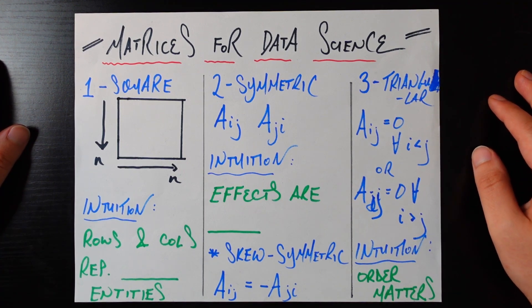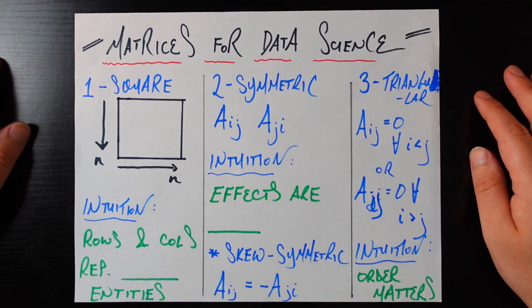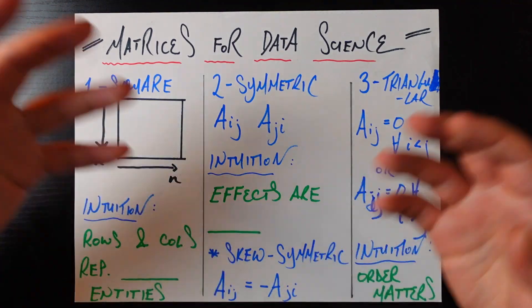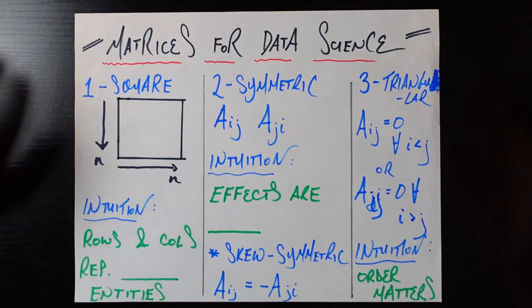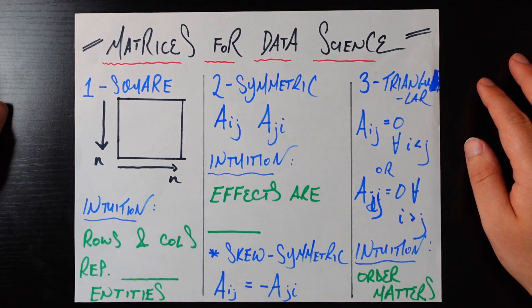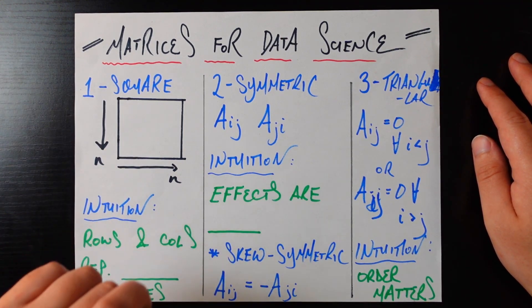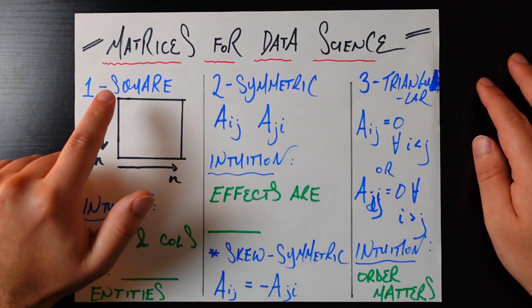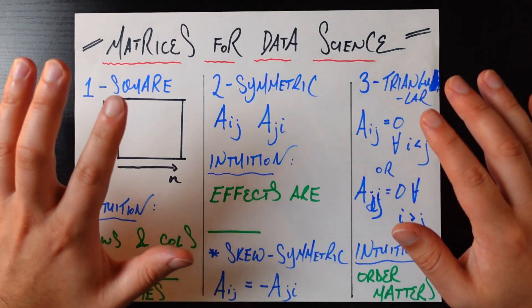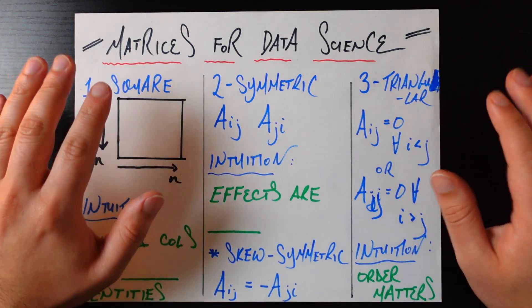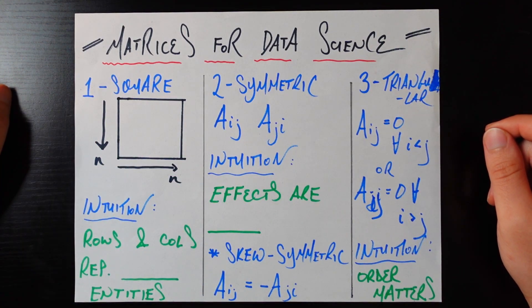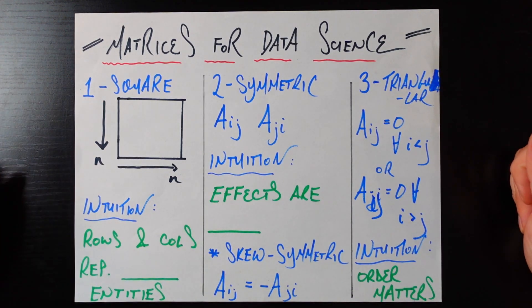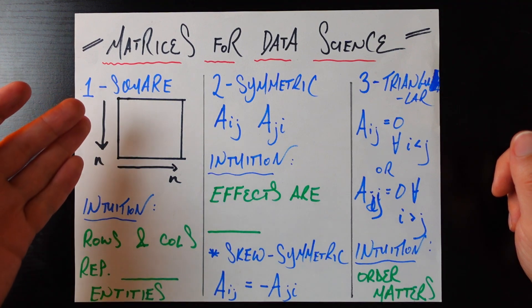This is probably going to be the first video in a series, because I'm not going to cover all of the important types of matrices. This will be the most basic, very widely used types I see all the time as a data scientist. All five matrices we're going to look at today share one property: they are all square matrices. There are definitely important non-square matrix types in data science, but we'll save those for a future video. That segues nicely into the first very important type of matrix, which is exactly a square matrix itself.